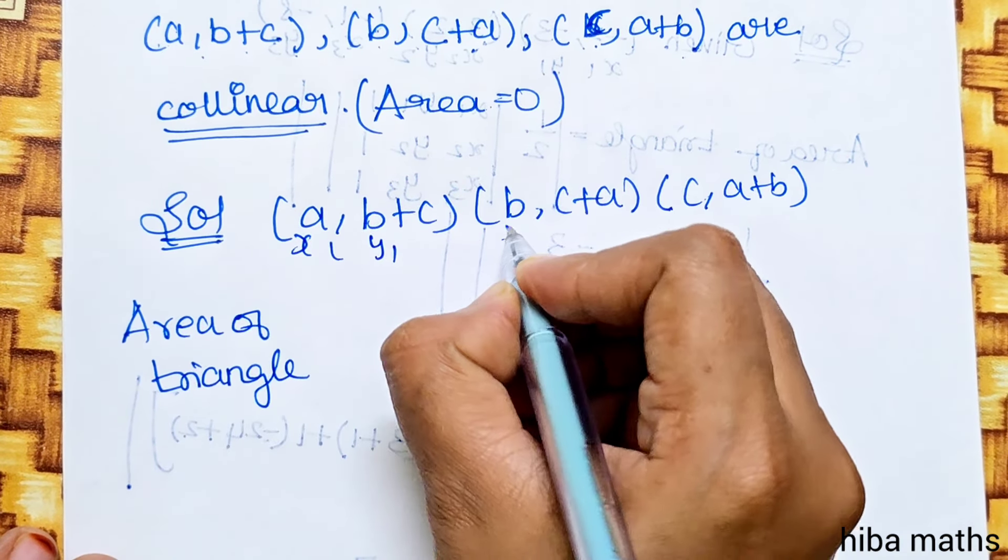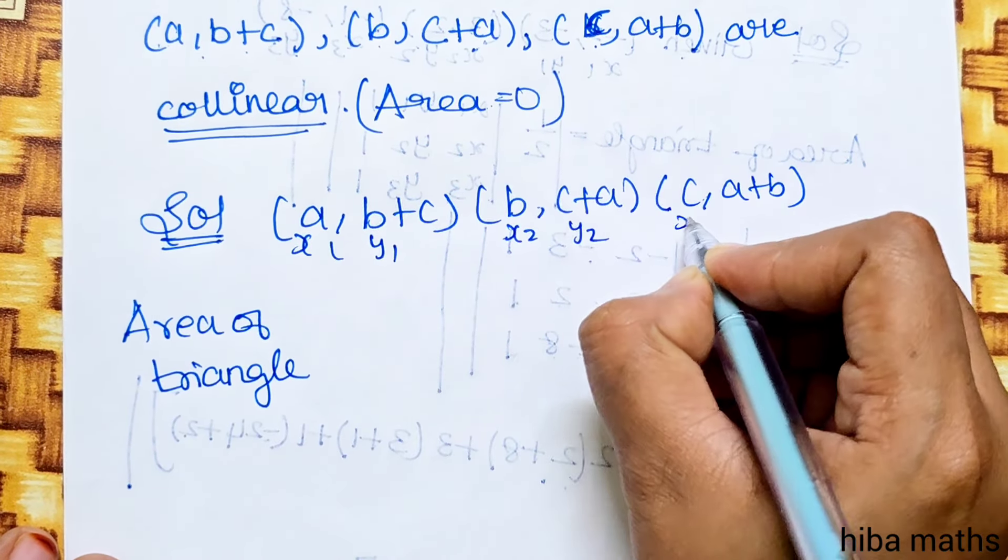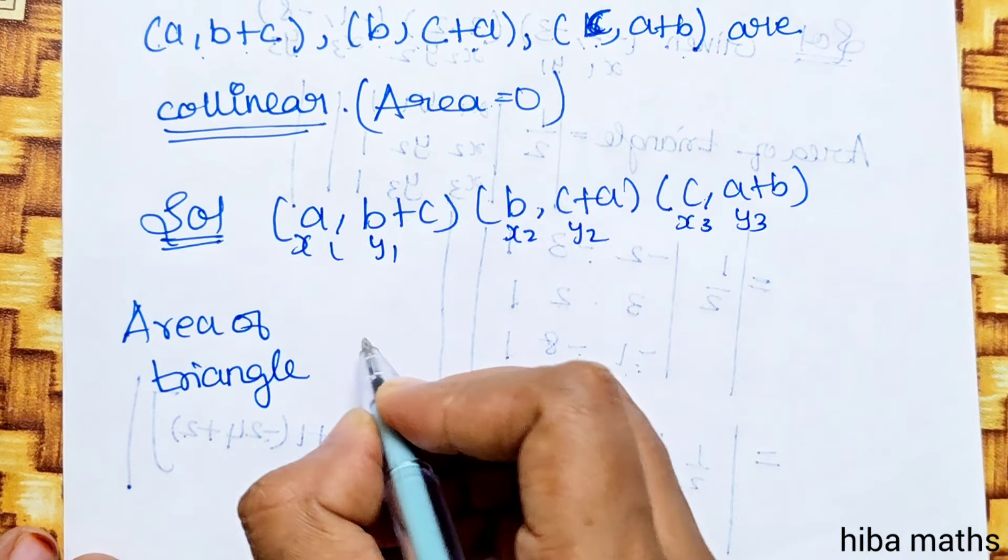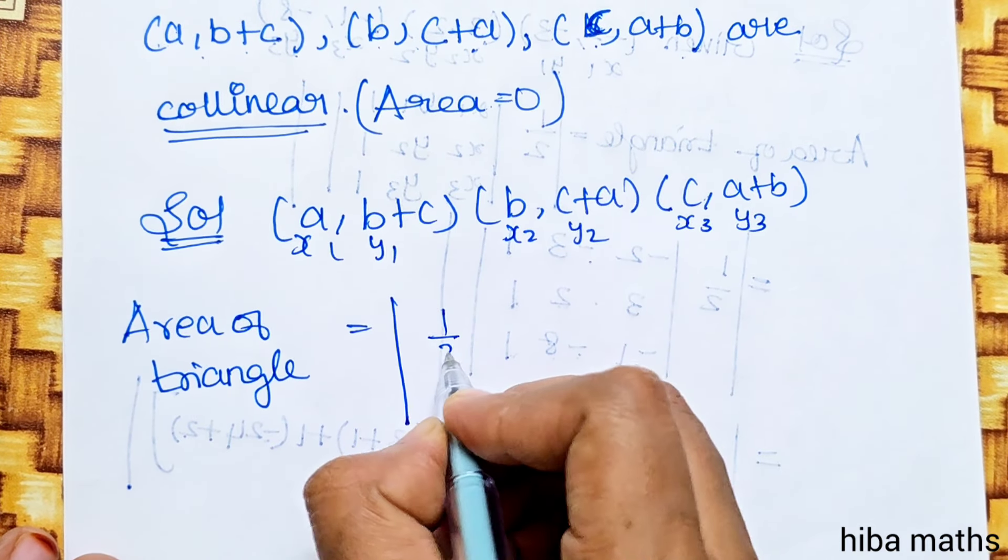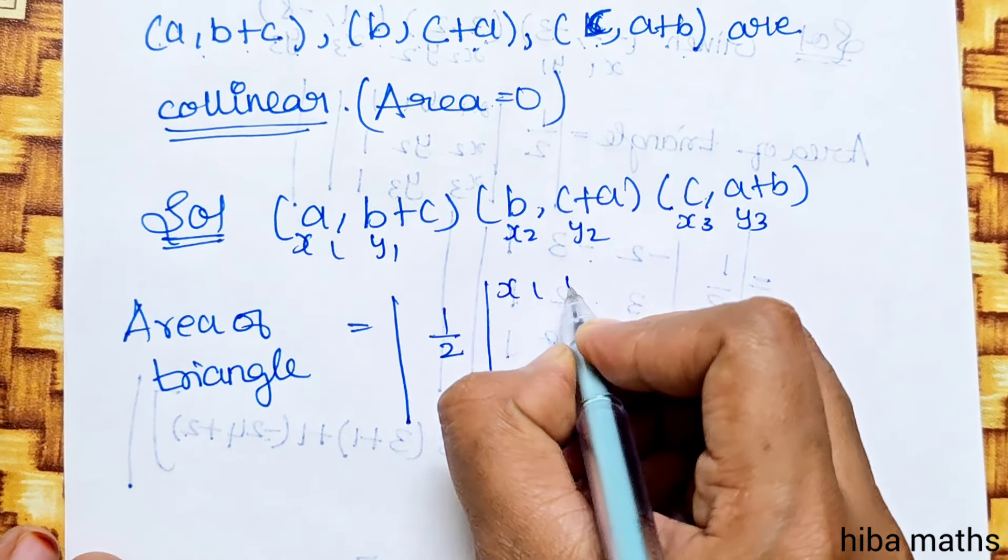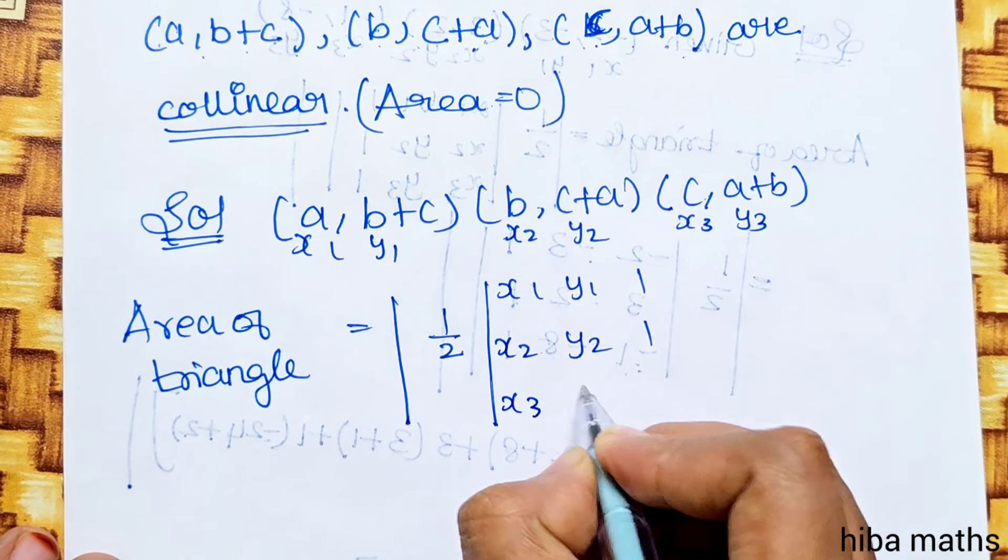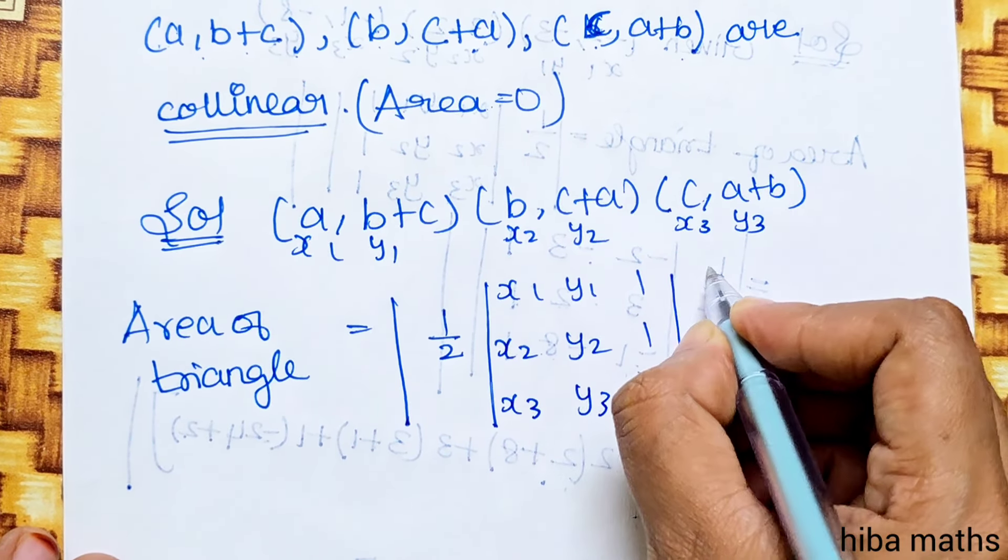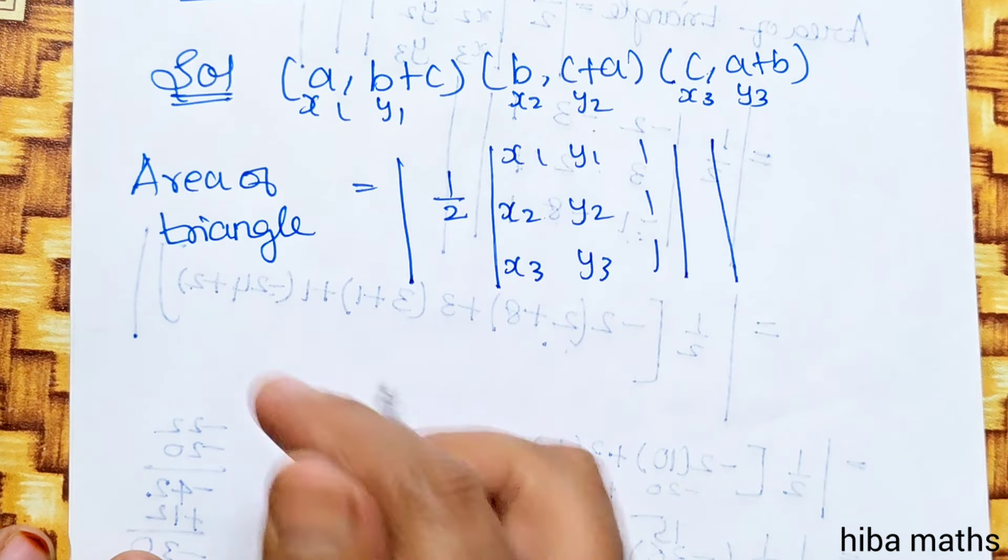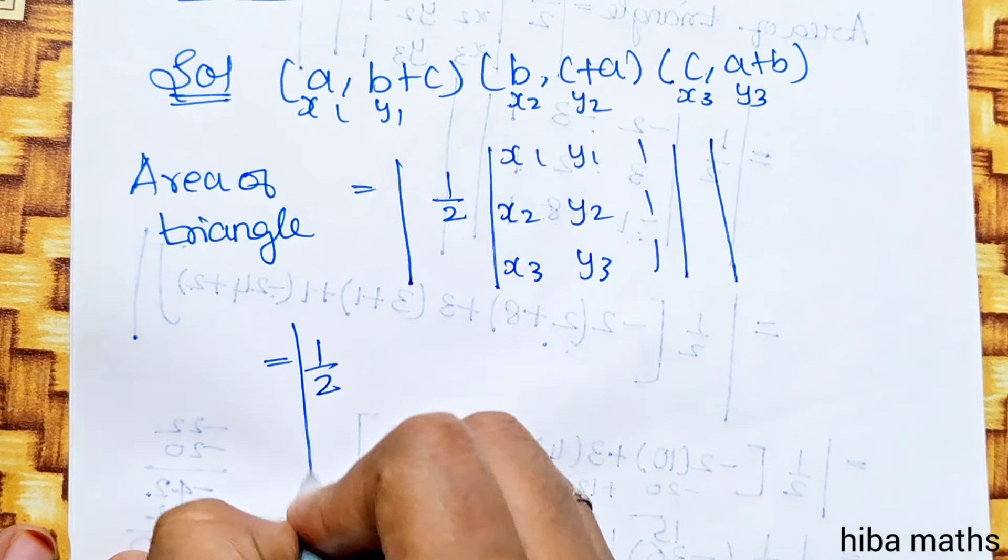In the solution, given points are (a, b+c), (b, c+a), (c, a+b). Area of triangle: substitute into the formula. This is x1 y1, x2 y2, x3 y3, which equals modulus of 1/2 times x1 y1 1, x2 y2 1, x3 y3 1.